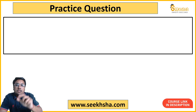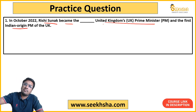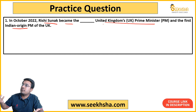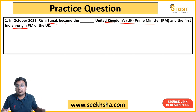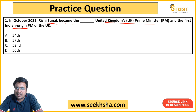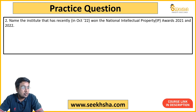First question: In October 2022, Rishi Sunak became the UK's Prime Minister and the first Indian-origin PM. There was a lot of excitement in India about this. People were saying that the country that ruled us for so many years now has our PM. This type of question appears as a surprise question in UPSC. Rishi Sunak was the 57th Prime Minister of the UK — that's the key fact to remember.